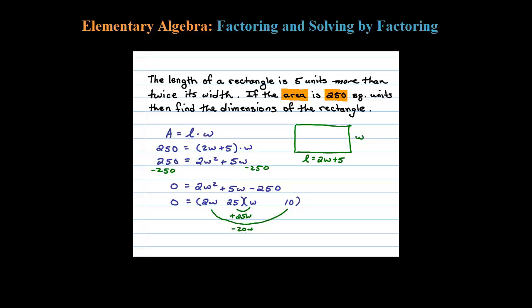That tells me if I put a plus here and a minus there, my middle term should work out. Now let's check the inner term: positive 25 times negative 10 is negative 250, so that works.